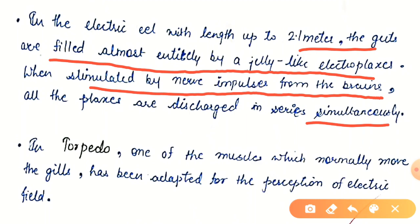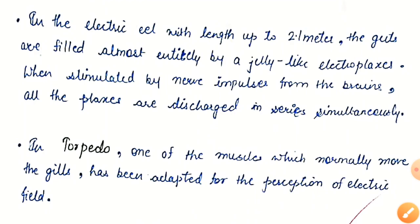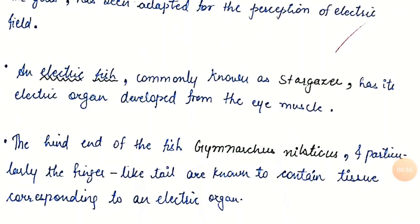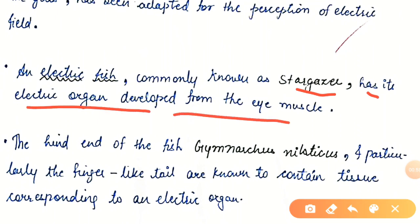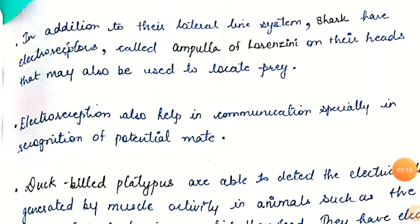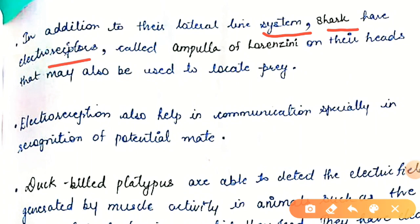In torpedoes, one of the muscles which normally move the gills has been adapted for the perception of electric fields, so they can sense nearby electric fields. An electric fish commonly known as the stargazer has its electric organ developed from the eye muscle. The hind end of the fish Gymnarchus niloticus and particularly its finger-like tail are known to contain tissue corresponding to an electric organ. In addition to the lateral line system, sharks have electroreceptors called ampullae of Lorenzini on their heads that may also be used to locate prey.